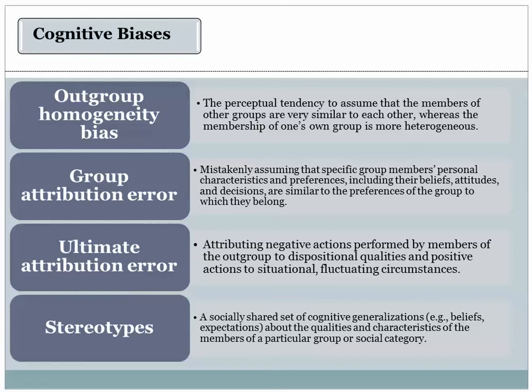Other biases which occur are more cognitive ones: the out-group homogeneity bias, the group attribution error, the ultimate attribution error, and stereotypes, as described in more detail in Chapter 14. All these biases contribute to people's tendency to misunderstand out-group members — for example, to assume that all group members are similar. Even if you simply observe one or two members of the out-group, you are happy to generalize to all members of the out-group. You would not generalize quite so freely to members of the in-group if you see one or two in-group members acting in a particular way.